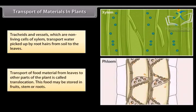Transport of food material from leaves to other parts of the plant is called translocation. This food may be stored in fruits, stem or roots.